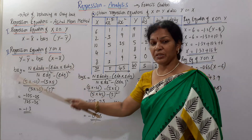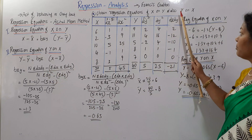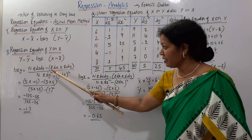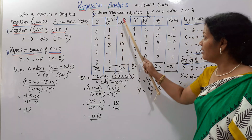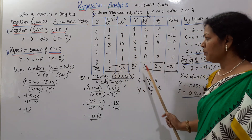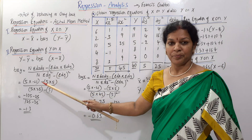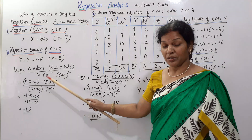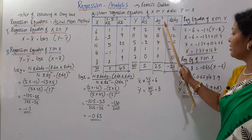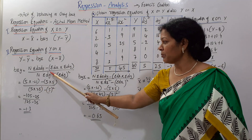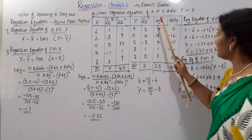Now we apply the bxy formula: n·Σ(dx·dy) minus Σdx·Σdy, divided by n·Σdy² minus (Σdy)². Here n equals 5. We substitute: 5 into Σ(dx·dy) minus Σdx·Σdy, divided by 5 into Σdy² minus (Σdy)². With Σdy² and Σdy values substituted, we get the result.